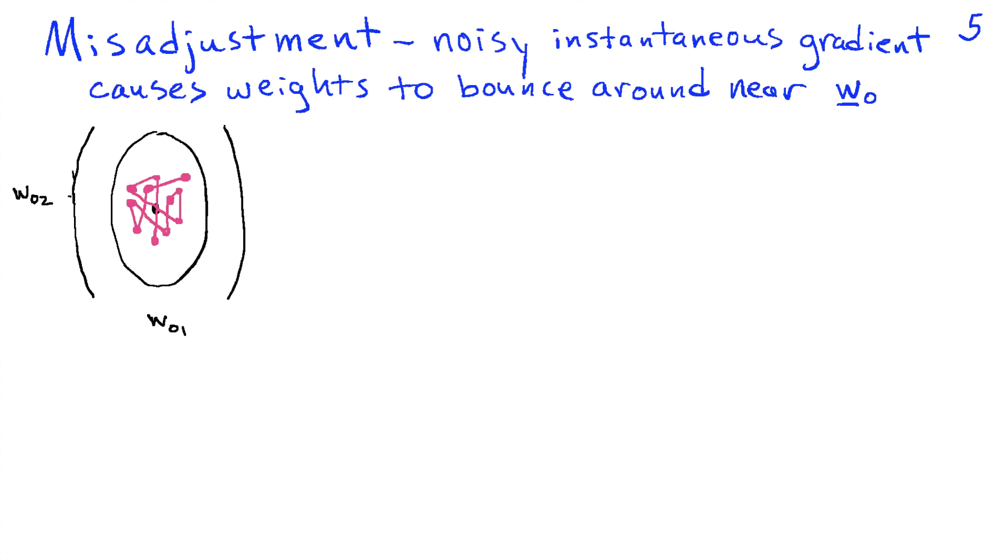Now there's another factor that is an explicit consequence of using this noisy instantaneous gradient. If we do get near the optimum solution, our gradient isn't always going to point us directly toward that solution, and we're going to tend to bounce around as we take steps. This bouncing around is known as misadjustment. This misadjustment is going to decrease as the step size decreases. Bigger steps means we're going to bounce more, and that's going to cause us to go up farther up the sides of the bowl, which means that we're bouncing around larger values of the cost function as well.